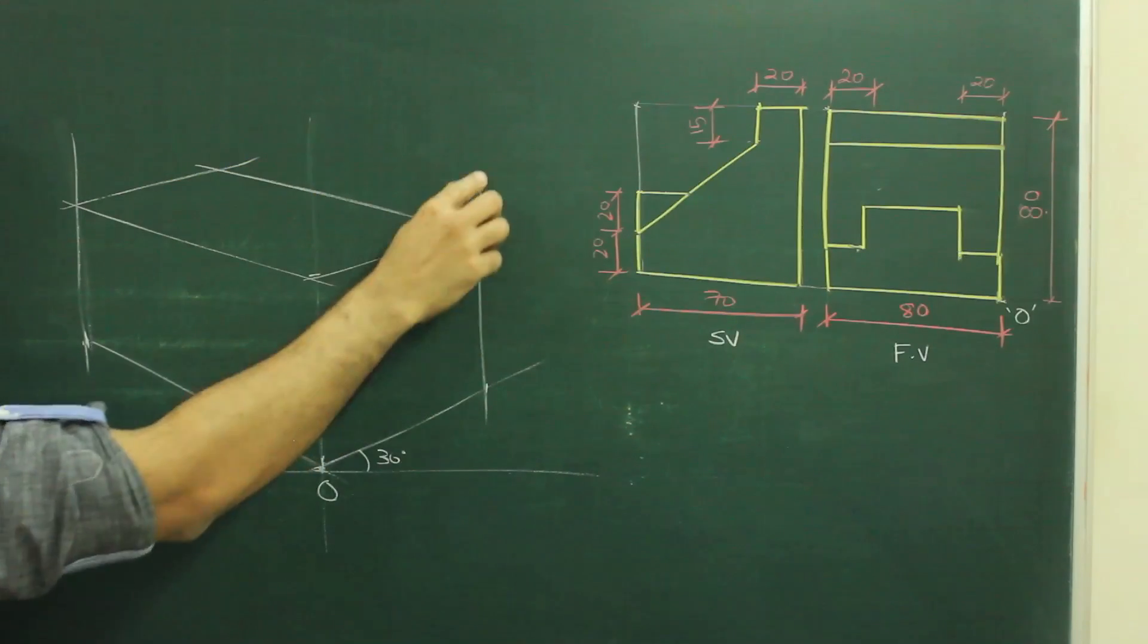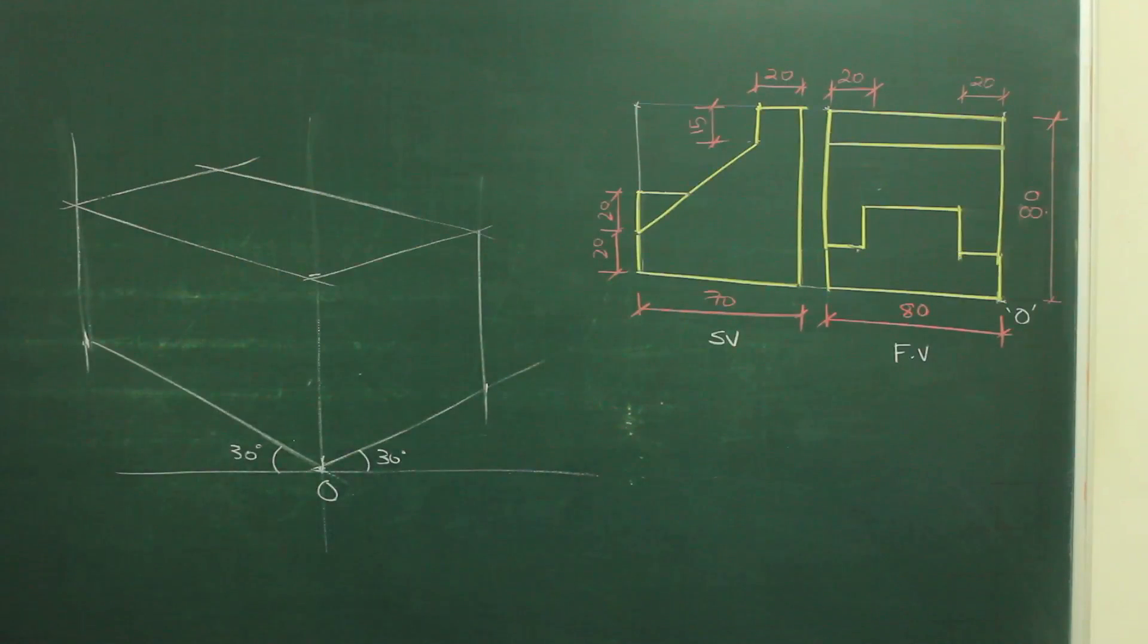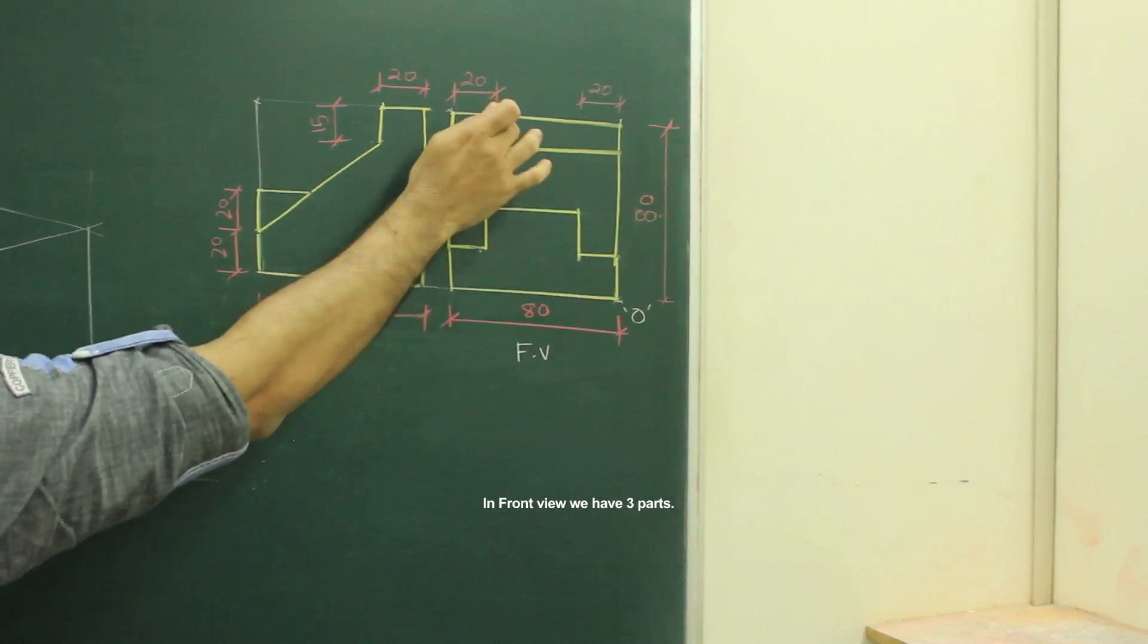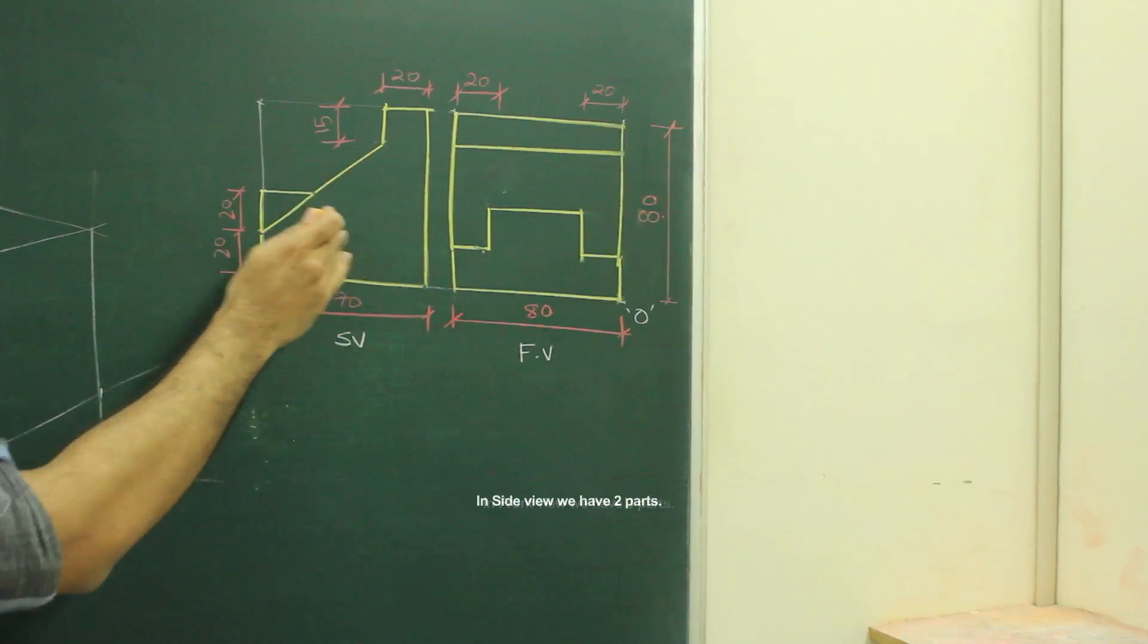After drawing this box, if you see front view, there are how many parts, three parts: one part, two part and three part. And if you see side view, there are only two parts.